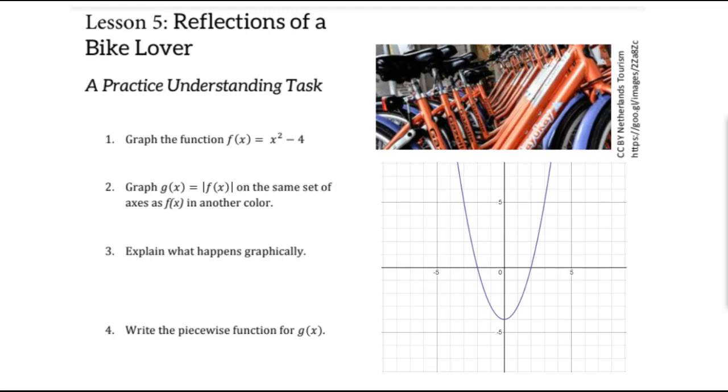This might be a good time to use some multiple representations like tables to help us do that, because tables we can at least see which numbers turn out to be negative and we'll know which ones need to change to positive. Some people like to look at that graphically and see where that happens. When we do graph the absolute value of f of x, we end up with this.